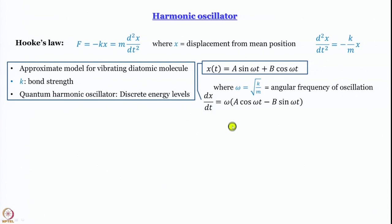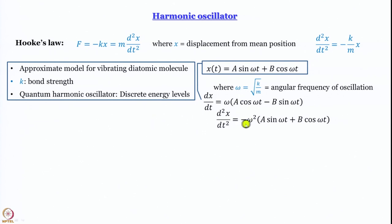Differentiating again, d²x/dt² turns out to be minus ω² multiplied by a sin(ωt) plus b cos(ωt), which gives us back x(t). First, this is an eigenvalue equation. Second, comparing with our original equation, it is clear that minus k/m equals minus ω², or ω equals the square root of k/m. This result comes from classical mechanics.